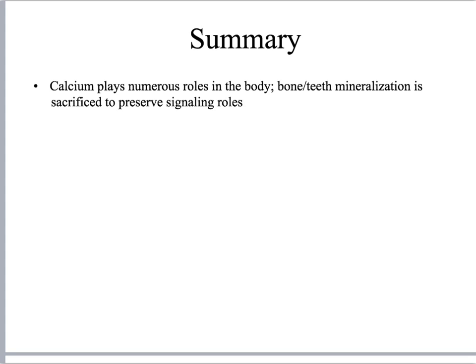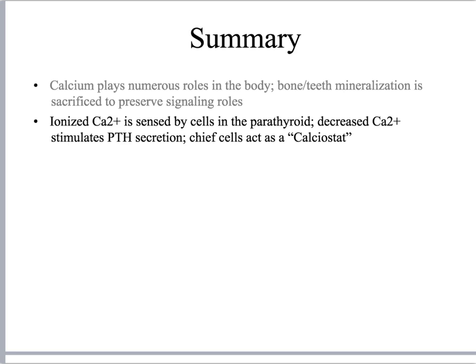To complete our summary: calcium plays numerous roles in the body, and bone and teeth mineralization get sacrificed to preserve the signaling roles of calcium. It is the ionized or free calcium that is sensed by the chief cells of the parathyroid gland, with decreased serum-free calcium stimulating parathyroid hormone secretion. The chief cells act like a calciostat, similar to a thermostat regulating temperature in a house.